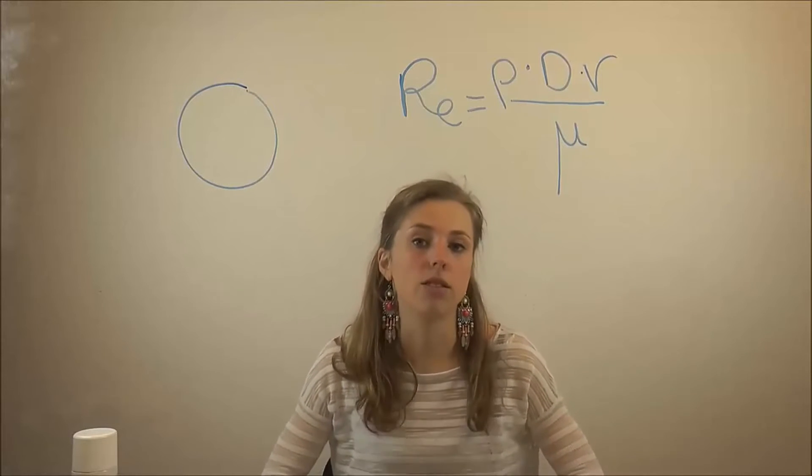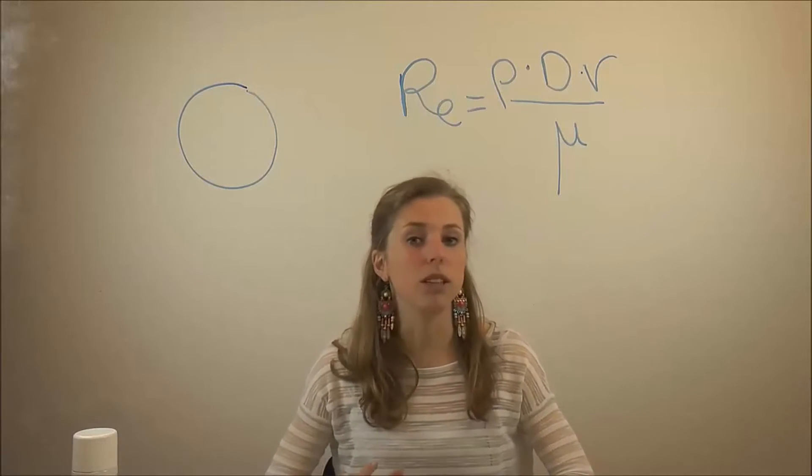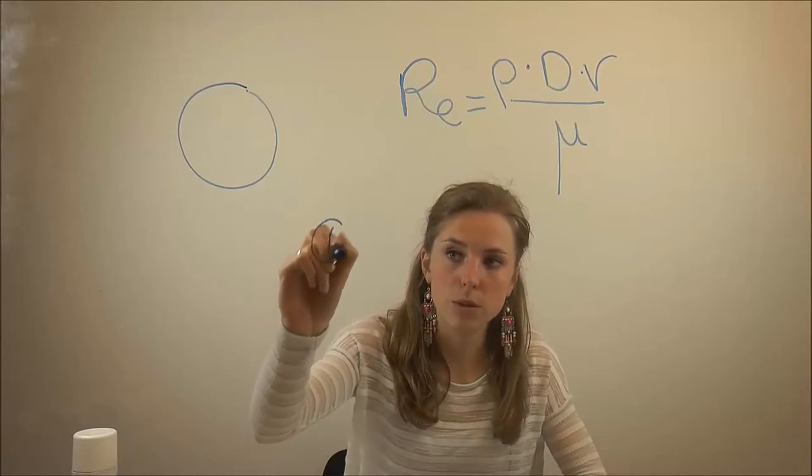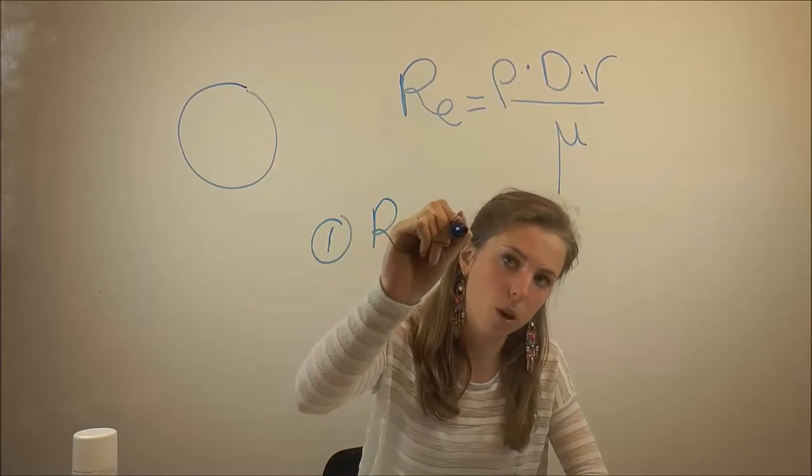Now you can calculate Reynolds number and you can say something about the flow. You can have two situations with this flow. You have situation one, that's when Reynolds number is below one.